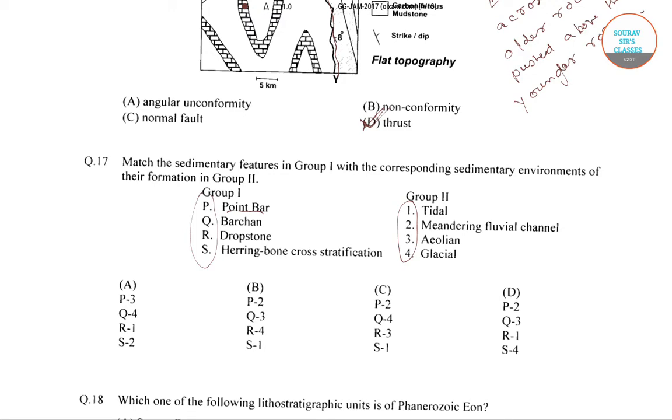Point bar is a depositional feature made of alluvium that accumulates on the inside bend of streams and rivers below the slip slope.